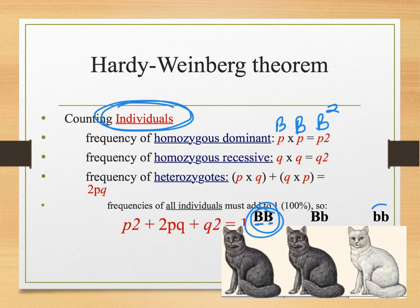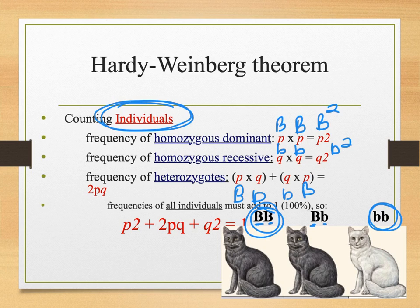Then you've got your homozygous recessive — little b, little b. And then your heterozygous — big B plus little b. So you're doing frequency, adding all of these up. This is a mathematical model. Don't get too hung up on this — we are going to practice this extensively. I'm just giving you the foundation of where these come from.